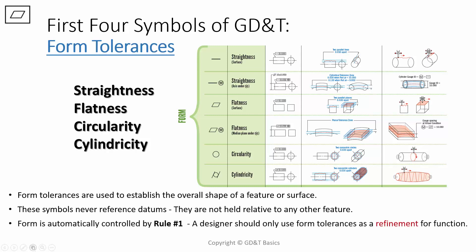Form is automatically controlled by rule number one. So when you design a part, you should only use these form tolerance symbols as a refinement for function if you want to further specify something.